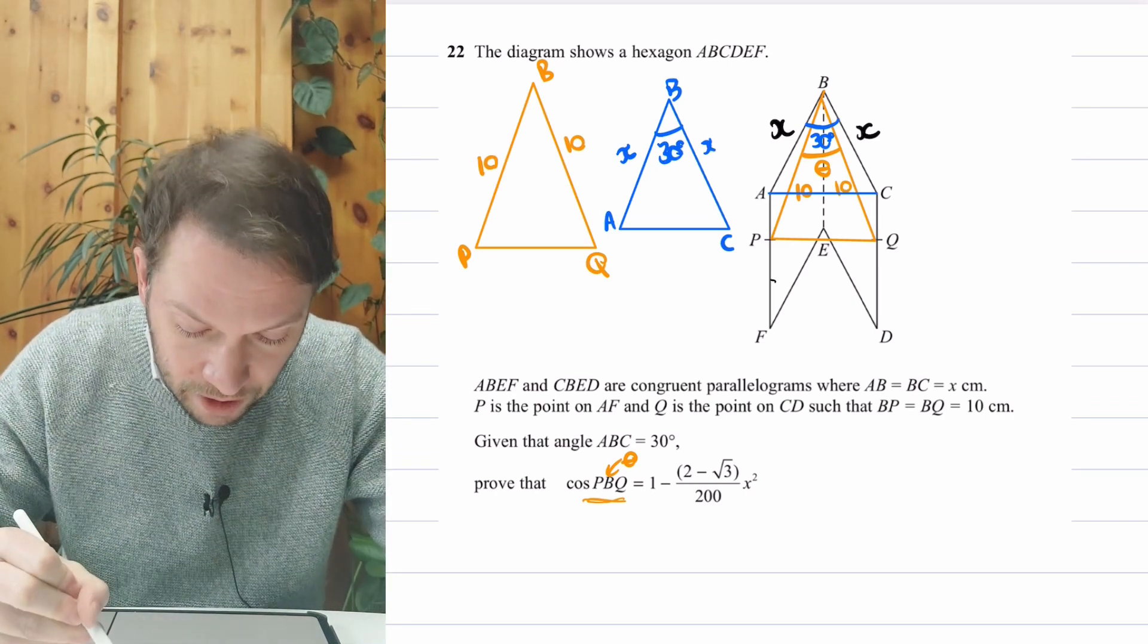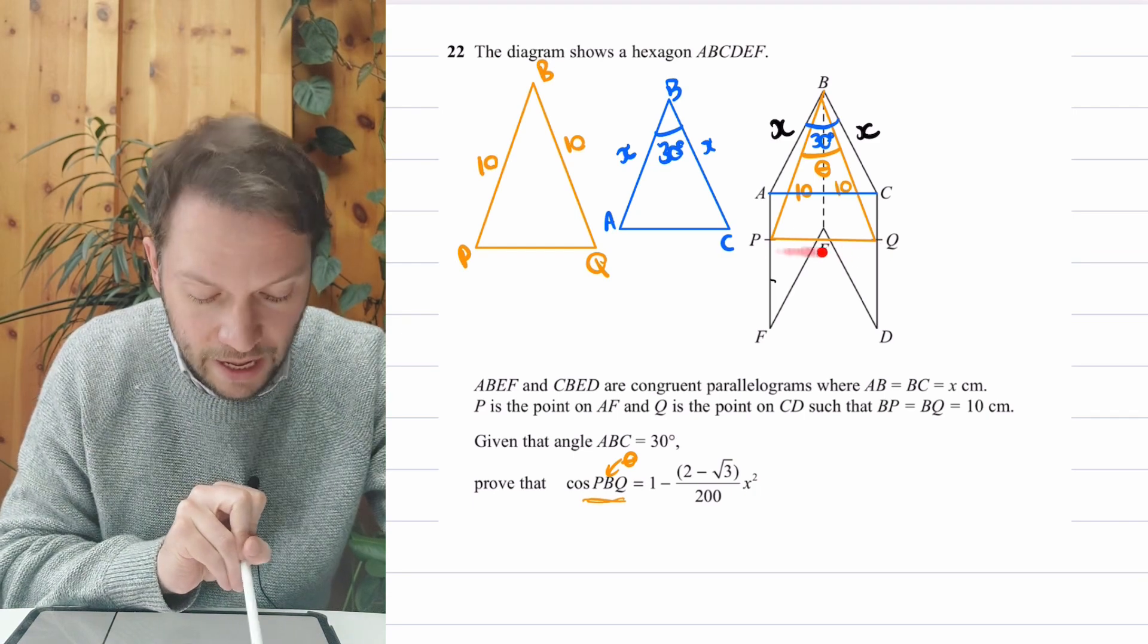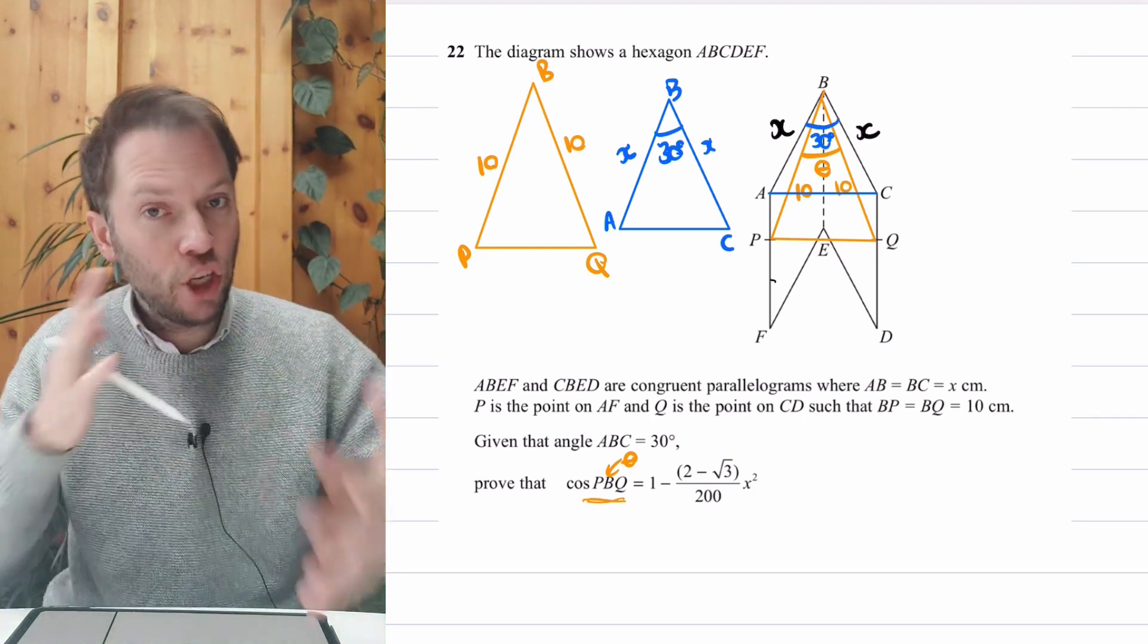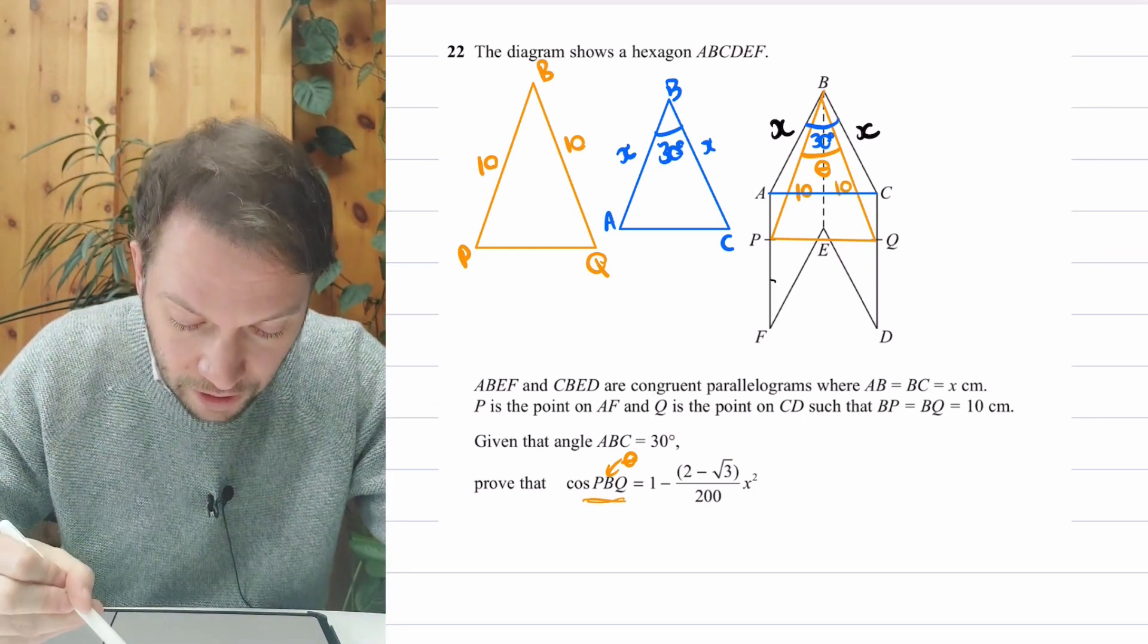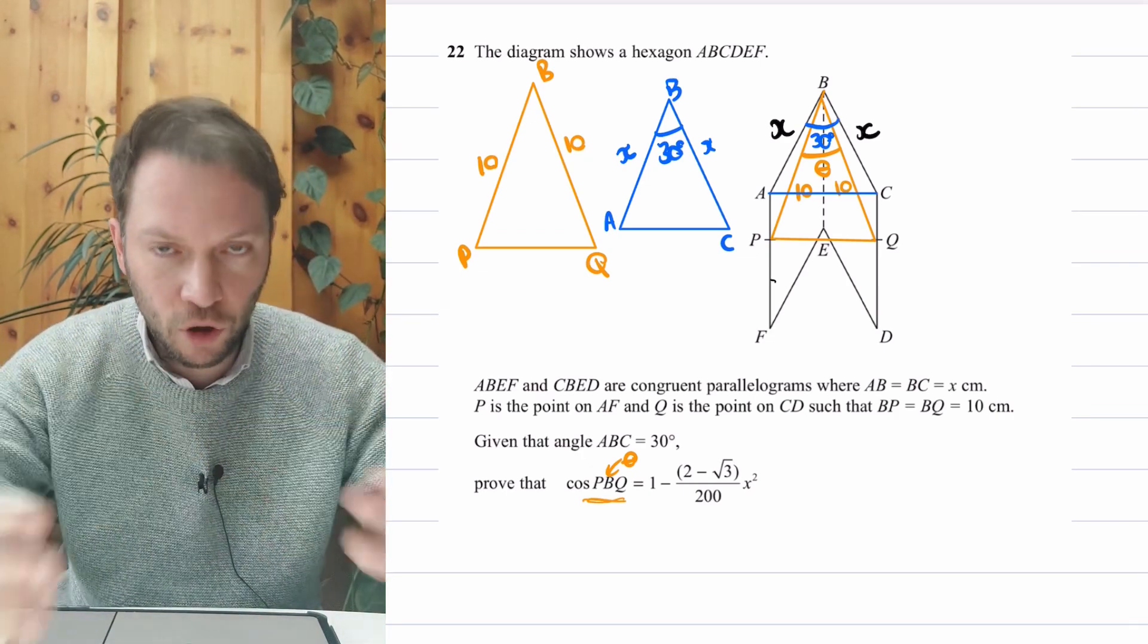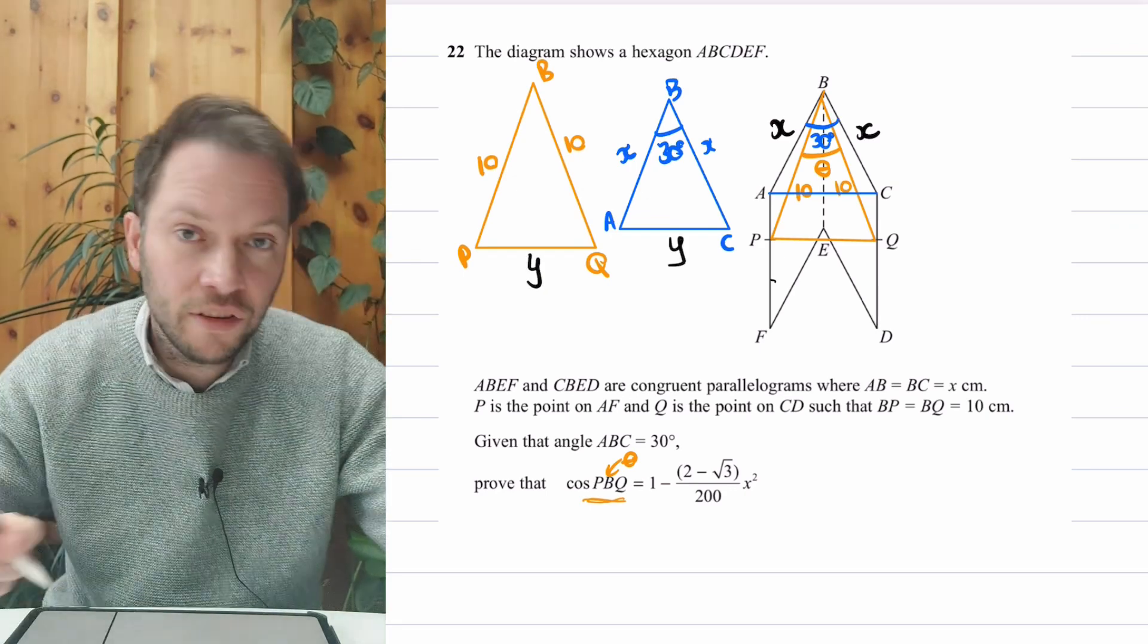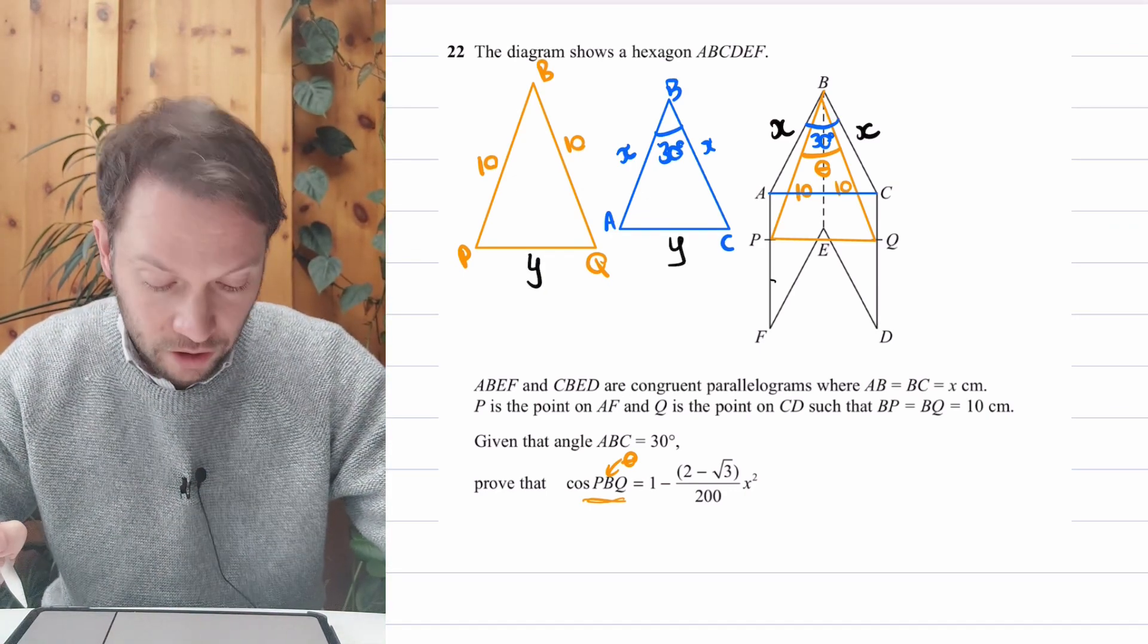Now, do you notice from the diagram that the length of AC is the same as PQ? And we can use that to relate the two triangles. So just for convenience, I'm going to call it Y. It just has to be something that's not a variable already used. I can't use X again. So I'm going to call these both Y. And I'm going to use that to relate the two triangles.